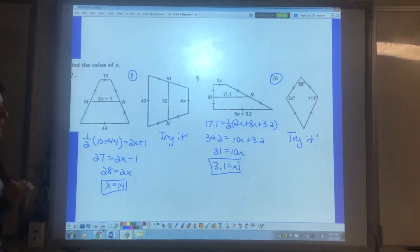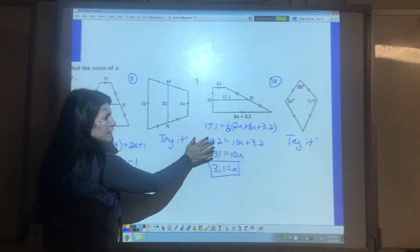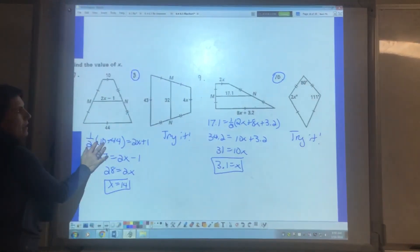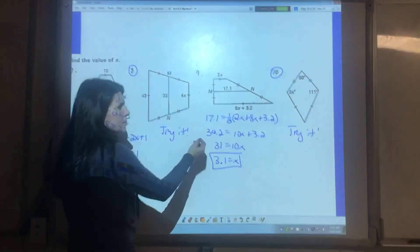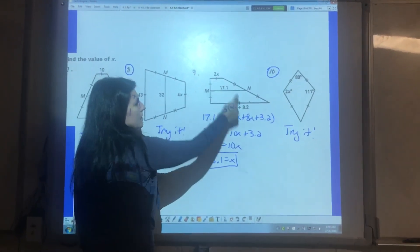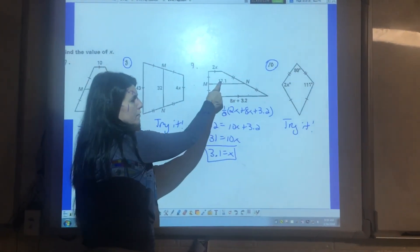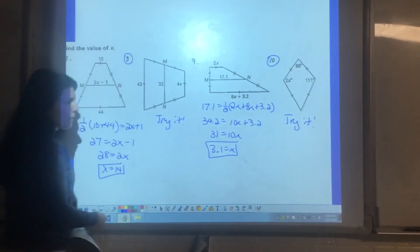Eight and nine, I want you to try, or eight and ten. Nine is exactly the same idea as number seven. The only difference is there are decimals in there. So this plus this divided by two gives you this. That's where my formula came from.